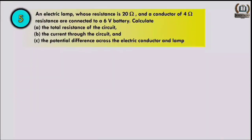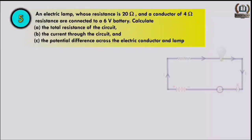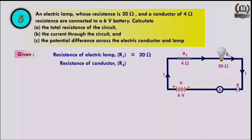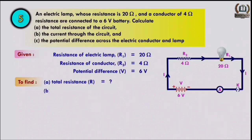Question number five: an electric lamp of resistance 20 ohm and a conductor of 4 ohm are connected to a 6 volt battery. Calculate the total resistance, the current through the circuit, and the potential difference across the electric conductor and lamp. Given: R1 = 20 ohm, R2 = 4 ohm, V = 6 volt.